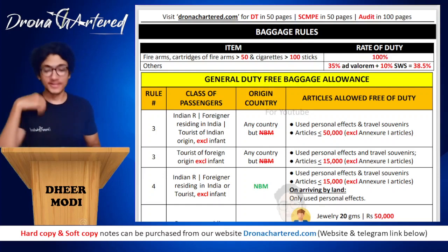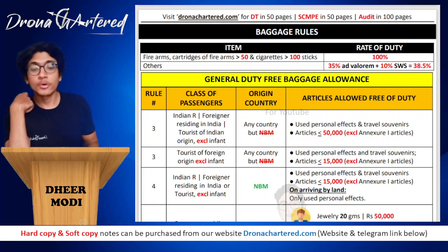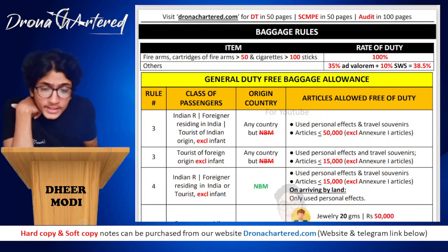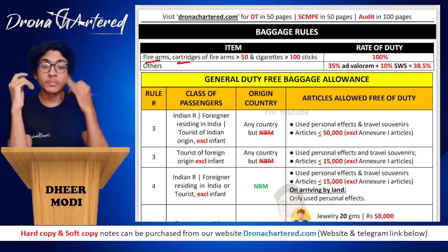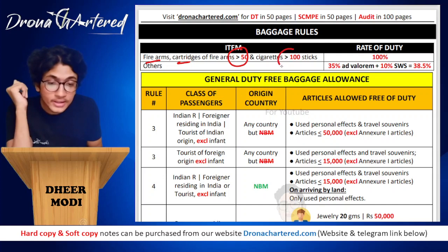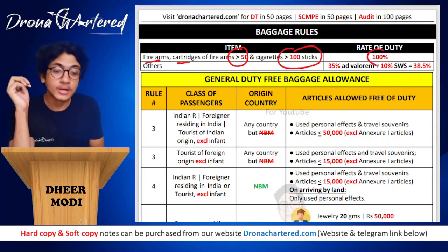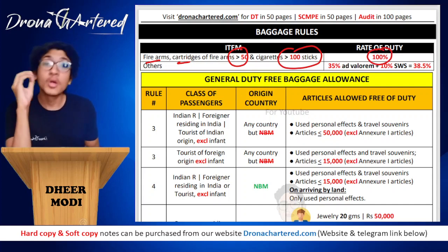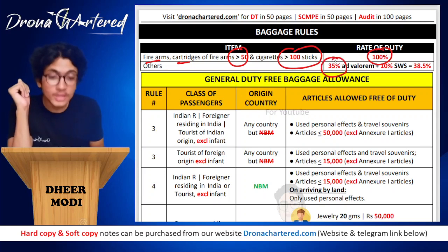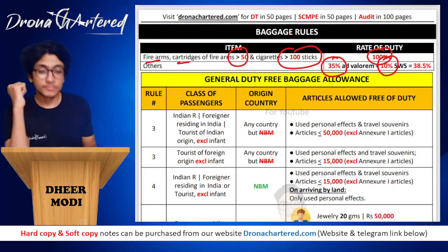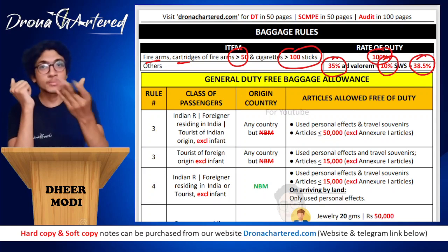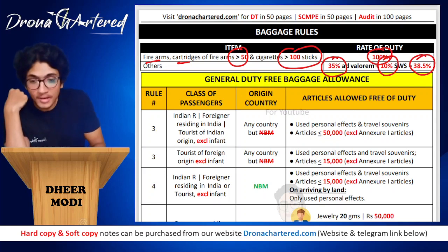Welcome to the next part on baggage rules. For baggage, there are certain limits and conditions to remember. Any firearm cartridges greater than 50 and cigarettes greater than 100 — the rate of duty will be 100%. For all others, it is 35% plus 10% social welfare surcharge, which comes to 38.5%.